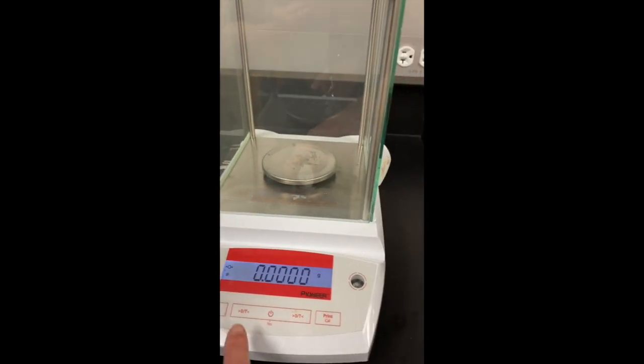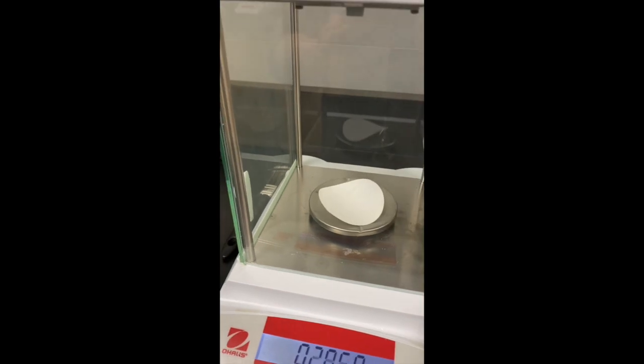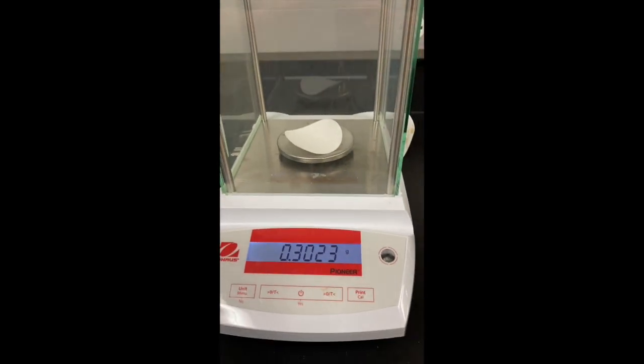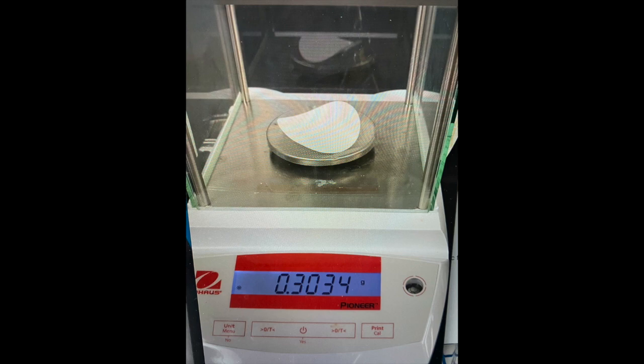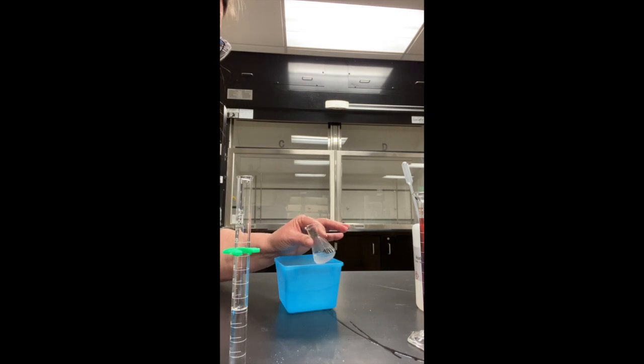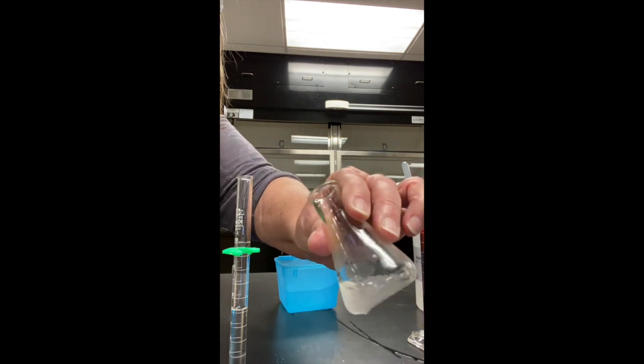So we're going to go ahead and make sure that our balance is tared and on our paper. And we're going to record the mass. So I had this in an ice bath for about five to seven minutes and it actually made some crystals. I guess that was pretty cold.